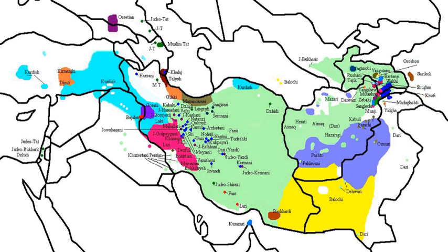The Balochi vowel system has at least eight vowels: five long and three short. These are a, e, i, o, u, a, i, and u. The short vowels have more centralized phonetic quality than the long vowels.